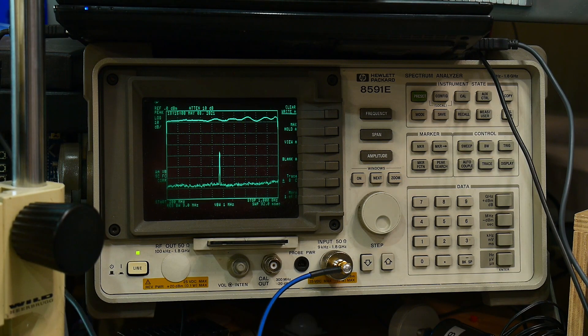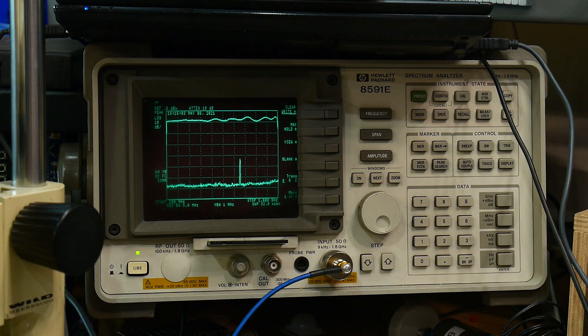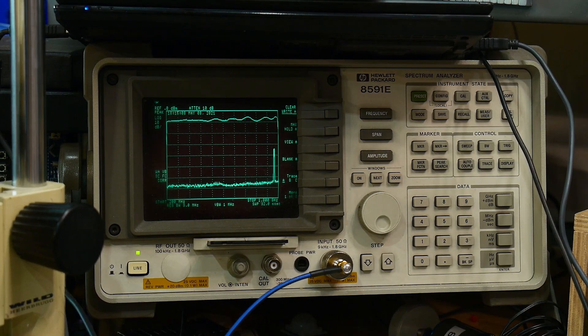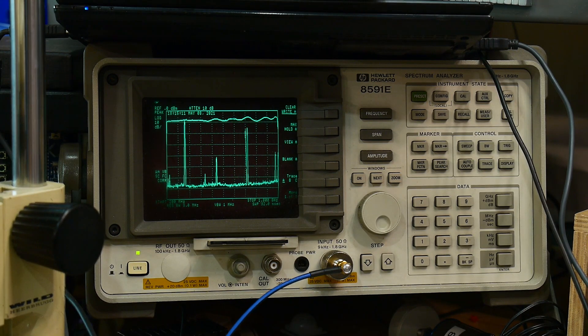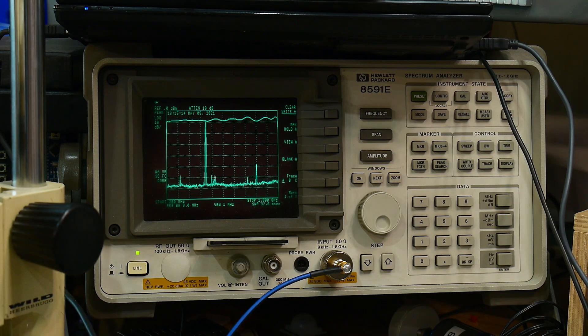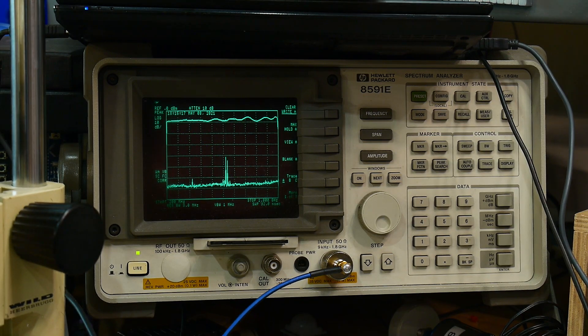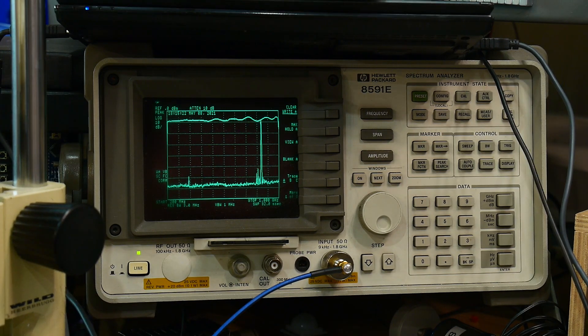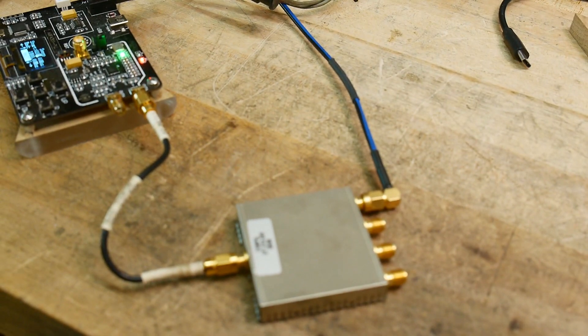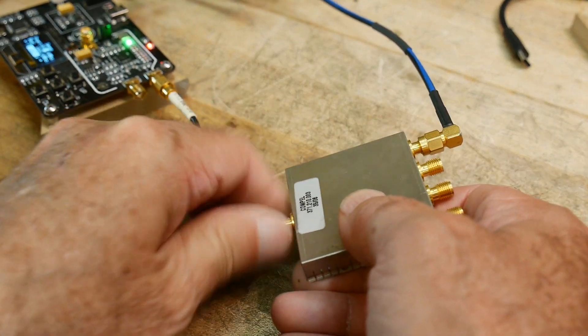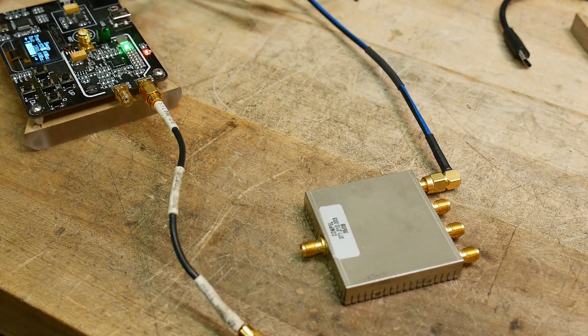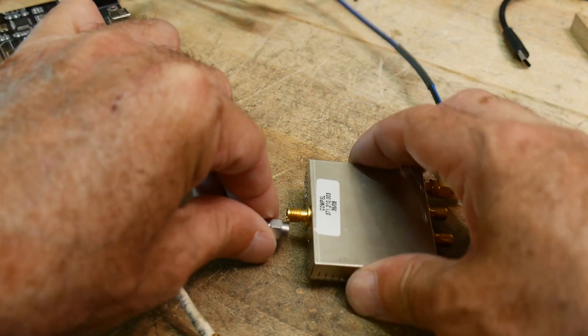Each port is giving the same output. So the next measure that we can make is the isolation between the two channels. So we will bring in the signal. So to measure isolation what we're going to do is we're going to take our signal and we're going to disconnect it from here and we're going to put a 50 ohm load here.